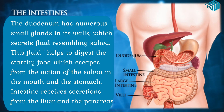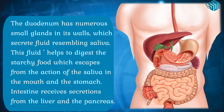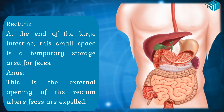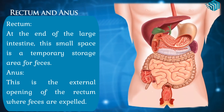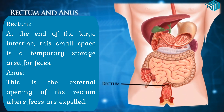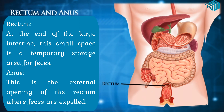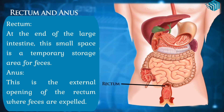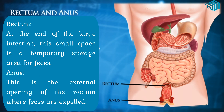The intestines receive secretions from the liver and the pancreas. Rectum and anus: the rectum, at the end of the large intestine, is a small space that serves as a temporary storage area for feces. The anus is the external opening of the rectum where feces are expelled.